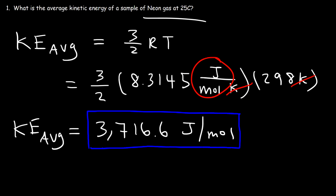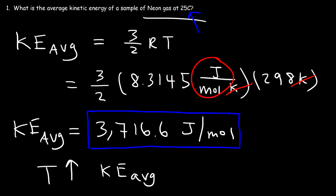Notice that the average kinetic energy was not dependent on the identity of the gas. It didn't matter if this was neon, helium, or argon — the only thing that mattered was the temperature. The average kinetic energy is directly dependent on temperature alone. So as the temperature increases, the average kinetic energy increases proportionally. If you double the temperature, the average kinetic energy doubles; if you triple it, the average kinetic energy triples.